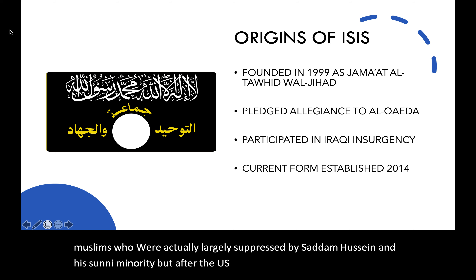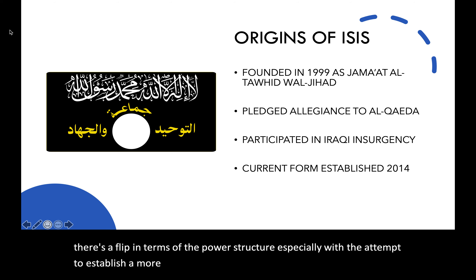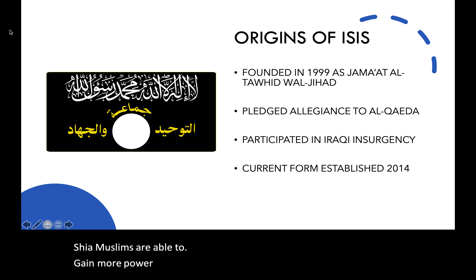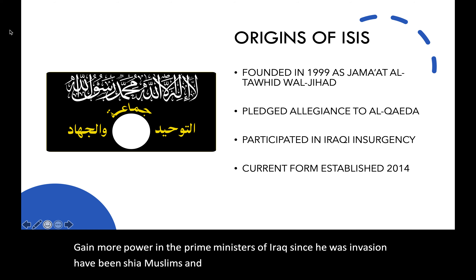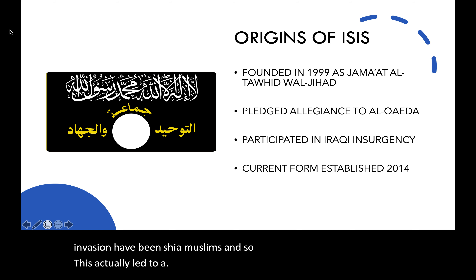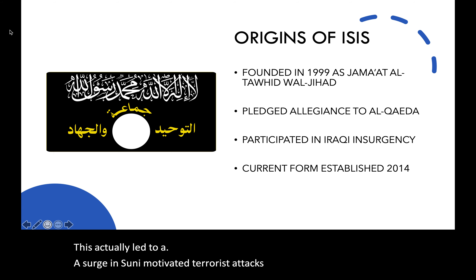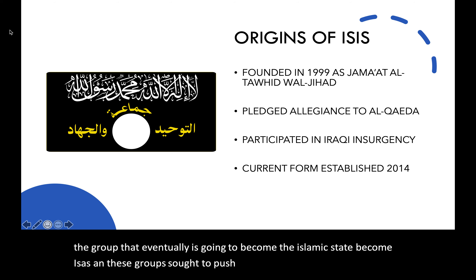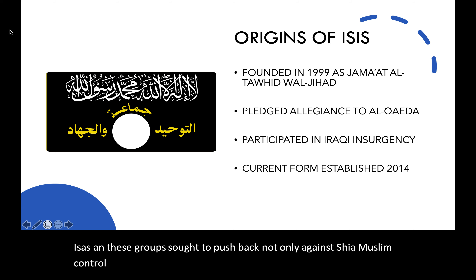After the U.S. invasion of Iraq, there was a flip in the power structure, especially with the attempt to establish a more democratic Iraq. The Shia Muslims were able to gain more power, and the prime ministers of Iraq since the U.S. invasion have been Shia Muslims. This led to a surge in Sunni-motivated terrorist attacks by al-Qaeda, as well as by the group that would eventually become the Islamic State — ISIS — which sought to push back against both Shia Muslim control and Western influence and presence in the Middle East.